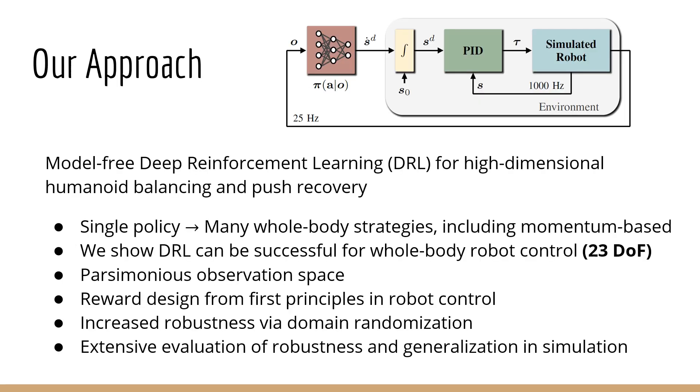Our proposed approach is to employ model-free deep reinforcement learning for high-dimensional humanoid balancing and push recovery. We show that robust momentum-based push recovery behaviors can emerge from learning, in addition to ankle, hip, and stepping strategies, all within a single neural network control policy. We demonstrate that deep reinforcement learning can be successful even with the challenging dimensionality of the action space, namely 23 degrees of freedom distributed in the entire body of the ICAB humanoid robot. We define a parsimonious observation space inspired by floating-based dynamics, still capturing the necessary information for solving the task.